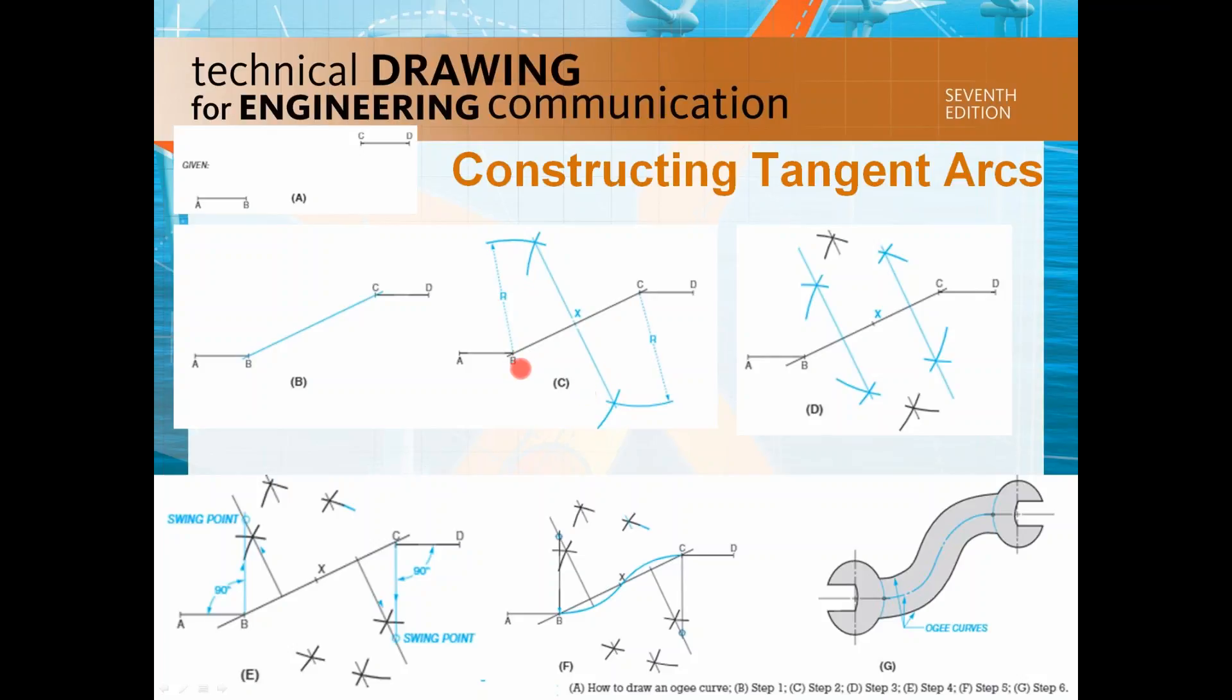The way to do the bisector line is to use this point B as a swing point and swing one arc there. Do the same thing, use this point C and swing another arc there. And then you make this intersection here, intersection here and draw a line. Connect these two intersection points and that is the bisector of BC.